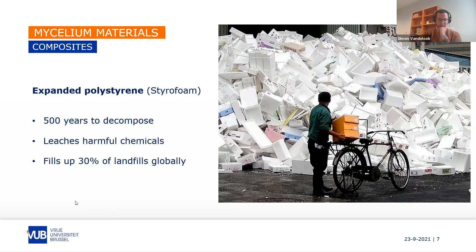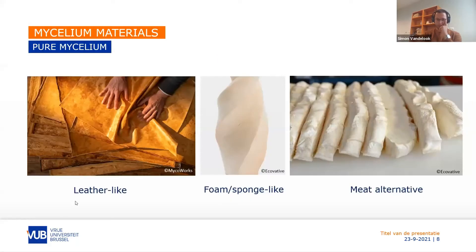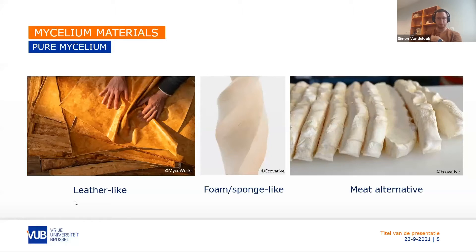Now let's have a look at the pure mycelium materials. These are composed solely of the fungal organism. Generally they can be leather-like, they can be foam or sponge-like, or they can also be tender tissue that is used as meat alternatives.